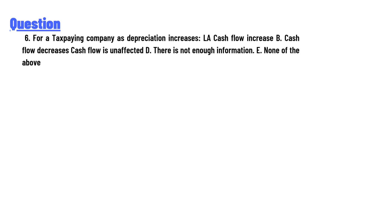For a tax-paying company, depreciation is increasing. The options are: (a) cash flow increases, (b) cash flow decreases, (c) cash flow is unaffected, (d) there is not enough information, or (e) none of the above.